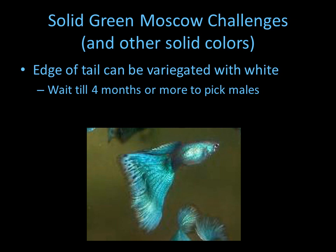Some of the challenges in breeding a solid green Moscow is that often the edge of the tail becomes variegated. When you're breeding for solid tail color, the key is to wait until around four months old — depending on your tank temperature, four to four and a half months old — and it will pretty much tell you if that male is going to get variegation or not. You'll see a slight edge of this variegation at the edge of the tail, and you should avoid using that male for breeding.